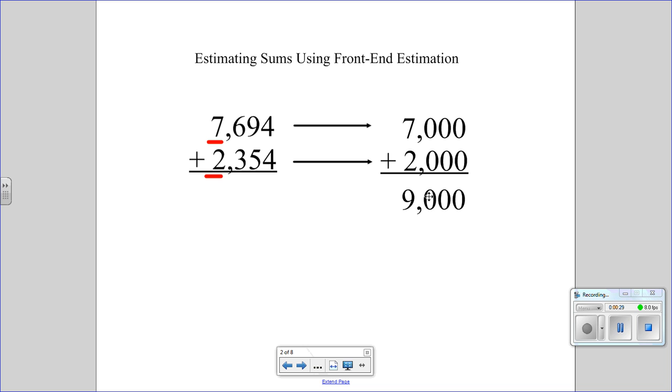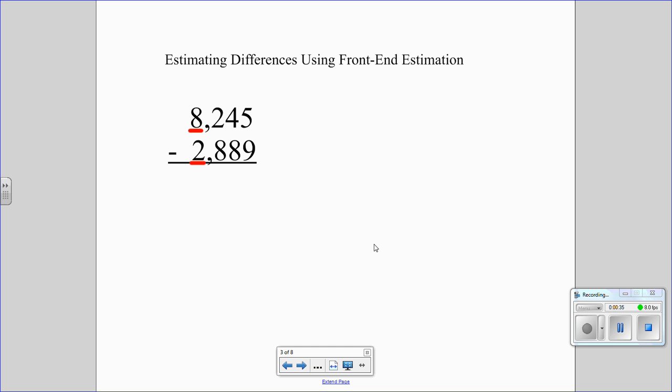This isn't really intended to be super accurate. It's just a quick estimate—that's about 9,000. We do the same thing with differences. We have this number 8,245, so we're going to round that to 8,000. The first one is just a 2, so I'm going to do 2,000. The answer is about 6,000.